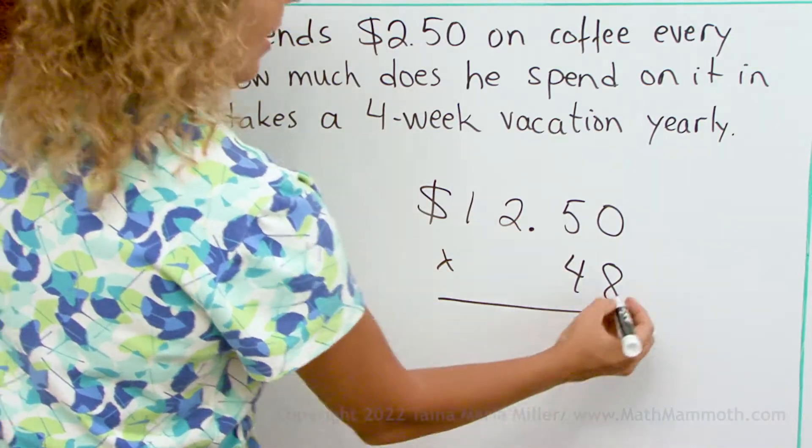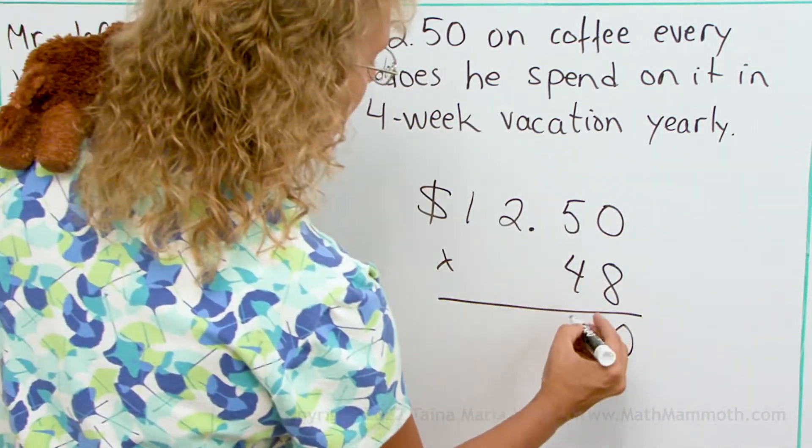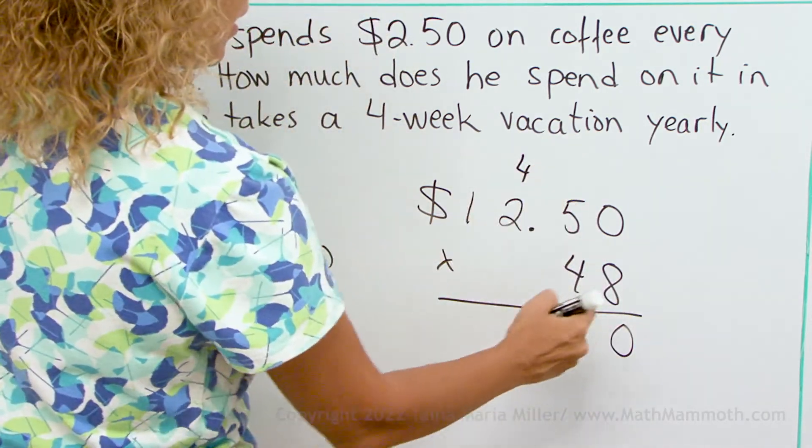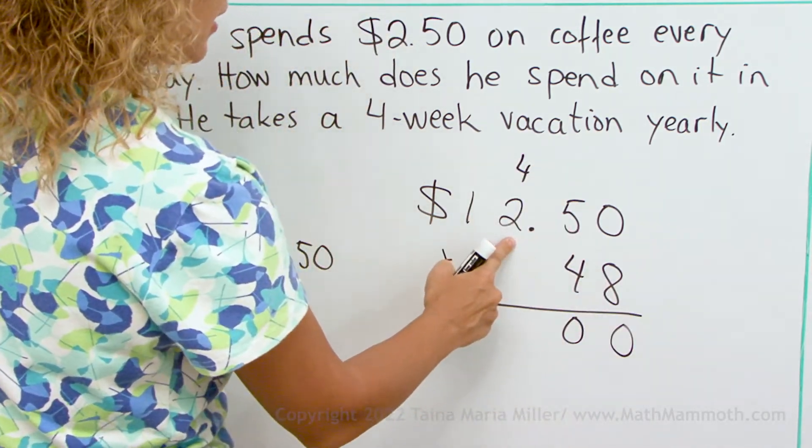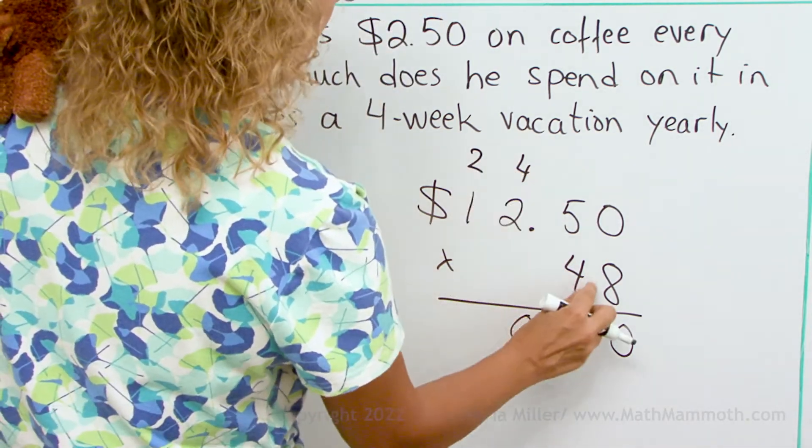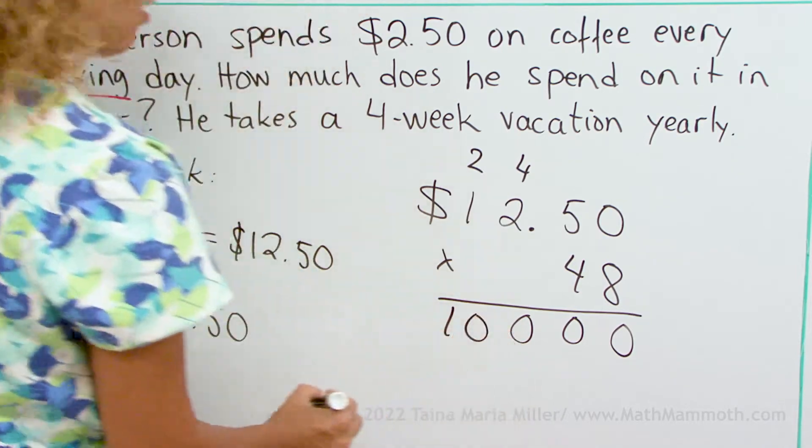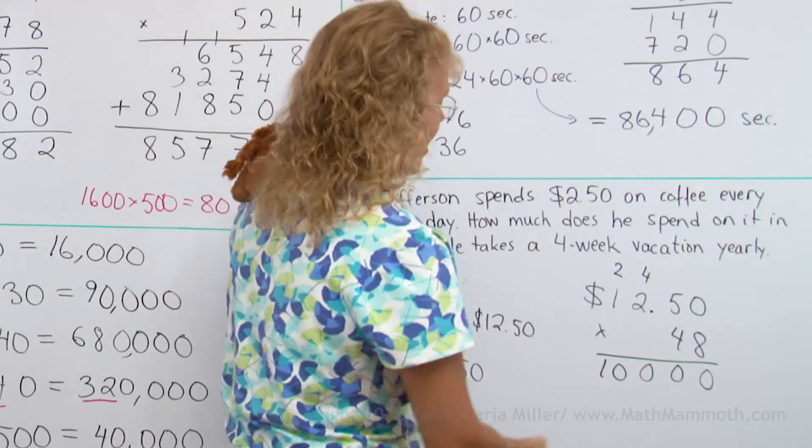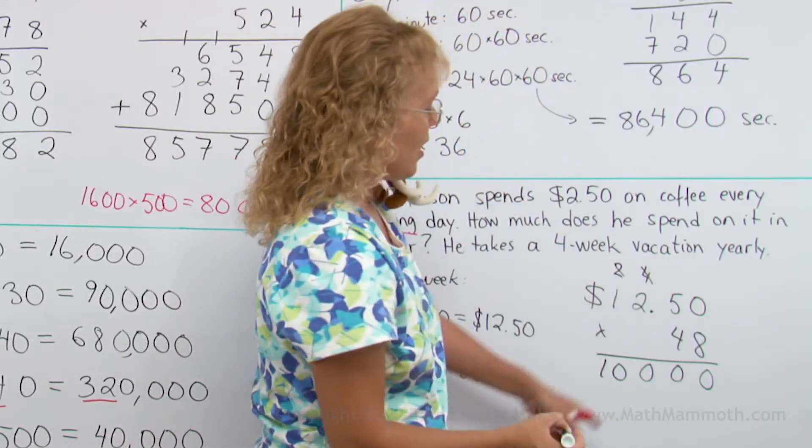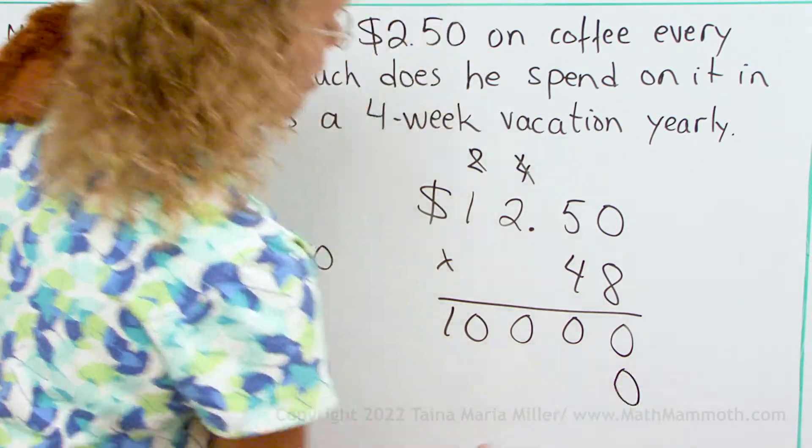Let's work that way. 8 times 0 is 0. 8 times 5 is 40. 8 times 2 is 16. Multiply by 40, but we need to start out by putting in another zero there.